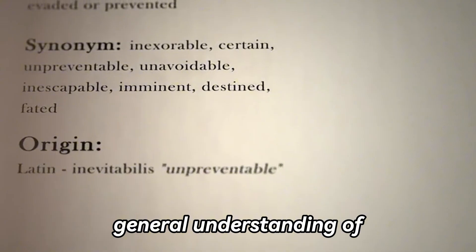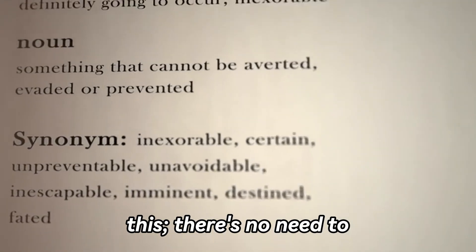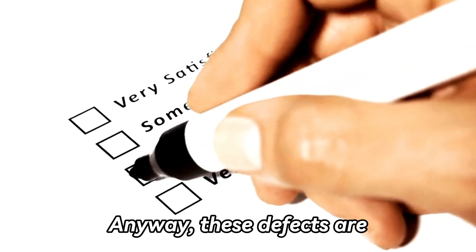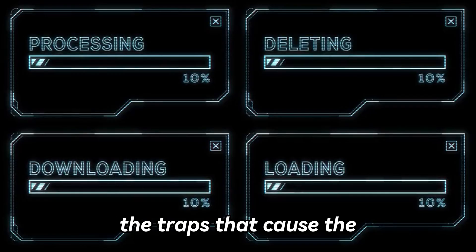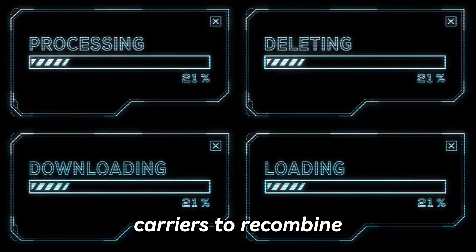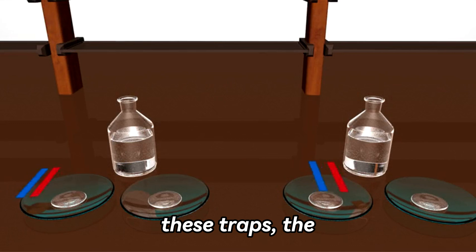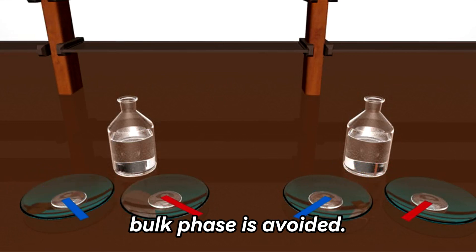You just need to have a general understanding of this. There's no need to go into too much detail, otherwise we'll have to explain a lot more. Anyway, these defects are the traps that cause the carriers to recombine within the bulk phase. Therefore, by eliminating these traps, the recombination within the bulk phase is avoided.